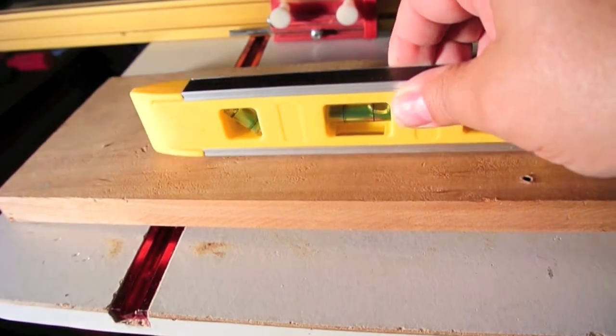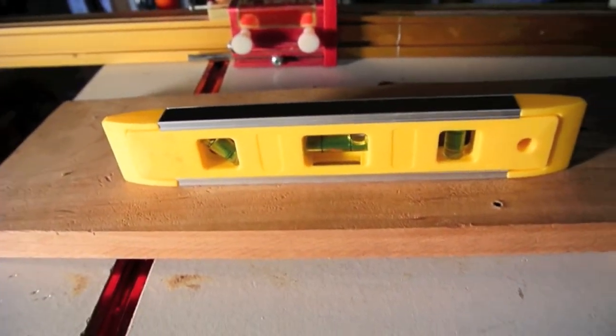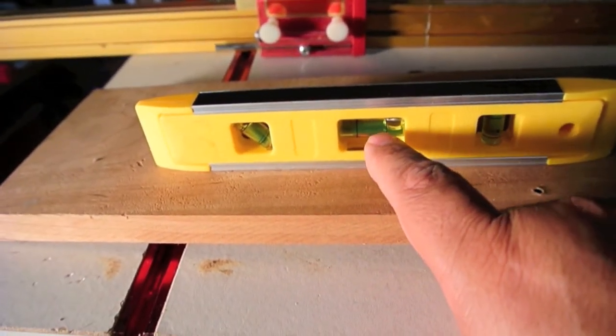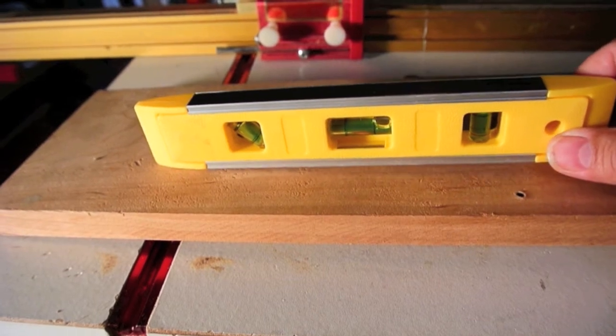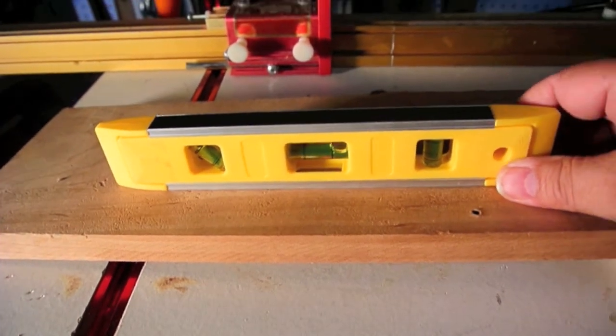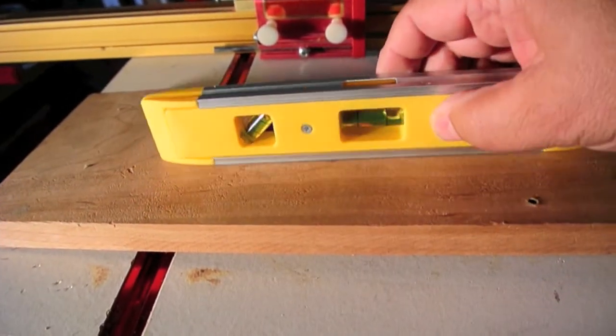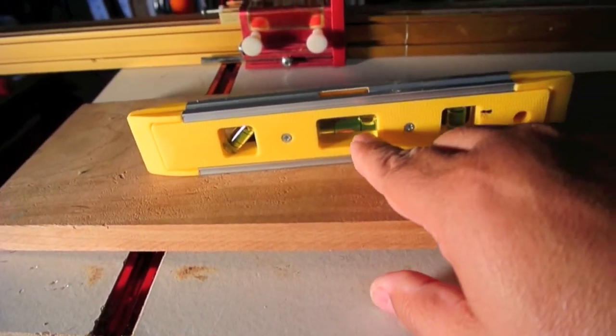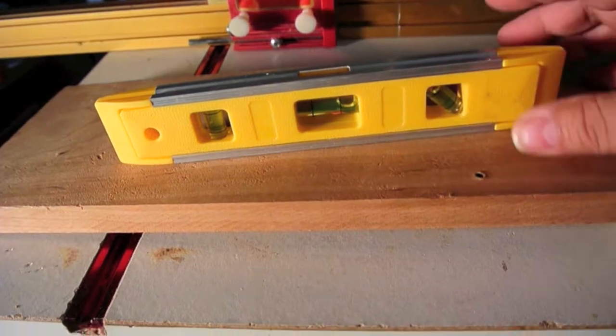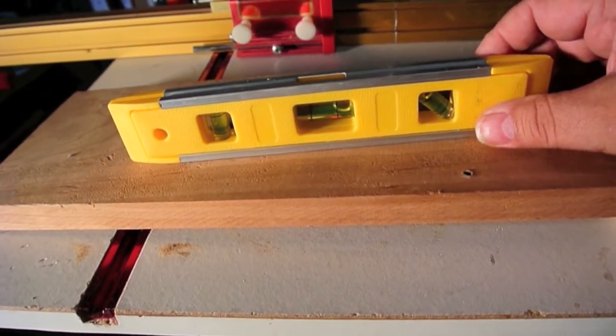So then when we put this on here you can see that even at 3 degrees, I can't get it to raise much more. So basically at 3 degrees this level is all the way, the bubble's all the way to one end. Same thing here.